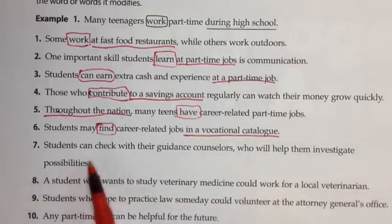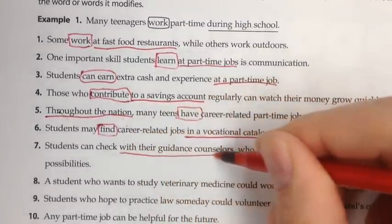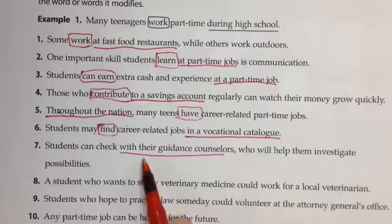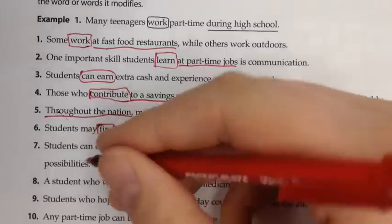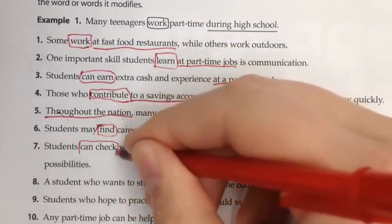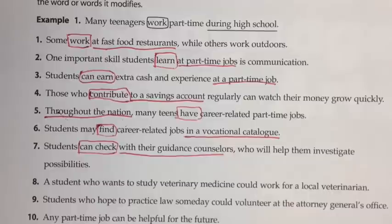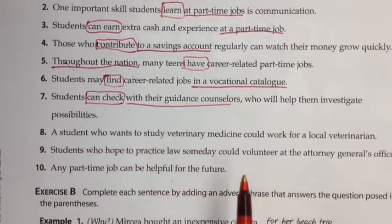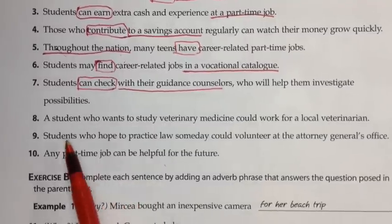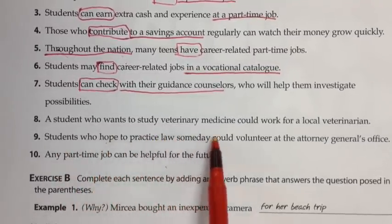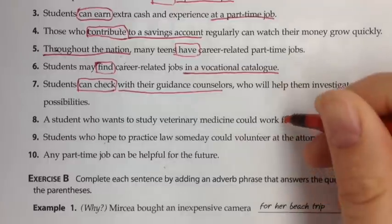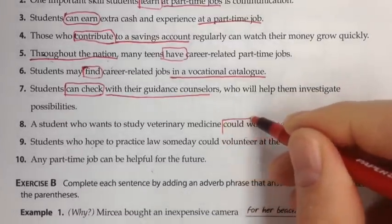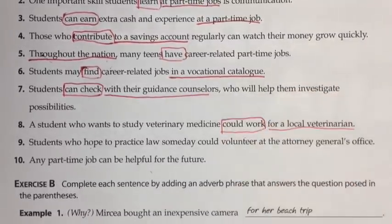Number seven: students can check with their guidance counselor, who will help them investigate possibilities. 'With' is a preposition, here is our object of that preposition, and it all describes 'can check,' which is a verb — telling us where or how they can check. Number eight: a student who wants to study veterinary medicine could work for a local veterinarian. This describes 'could work,' telling us where or how they could work.